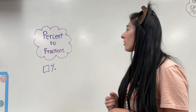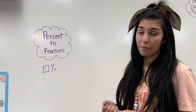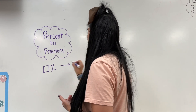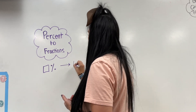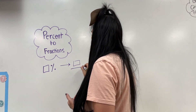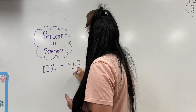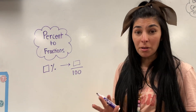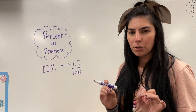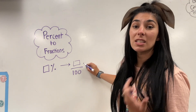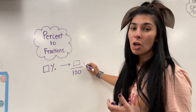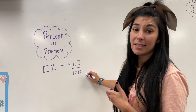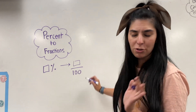Now let's go to fractions. When going from percent to fraction, I take my percent and make that my numerator, and it always goes over 100 since it is a percent. The only thing that can get a little tricky is if the numerator has a decimal in it — in that case, you'll have to move the decimal over, which will add a zero to the denominator.